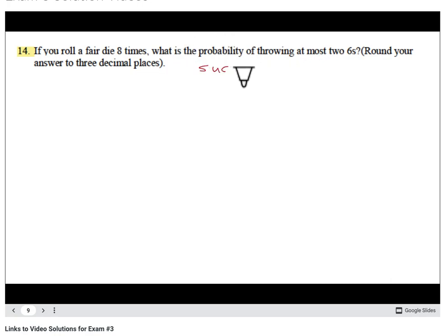We want at most two, which means either two or one or zero. So there's three things out of eight times. What we have to do is the binomial setup: the probability that X equals two, plus the probability that X equals one, plus the probability that X equals zero sixes.